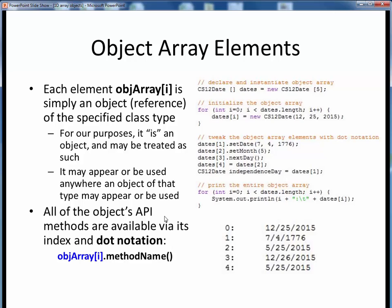So, in this code example on the right, let's say we set up this array of CS12 dates of size 5. Then in this next initialization loop, each element, date sub i, simply represents one individual CS12 date object.